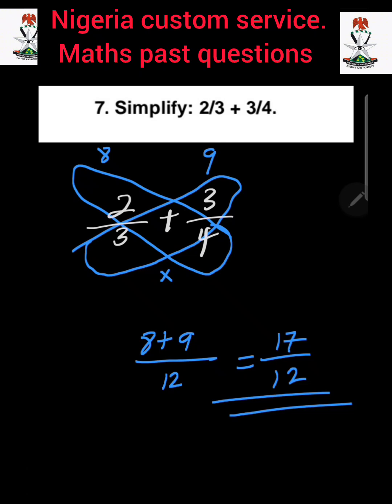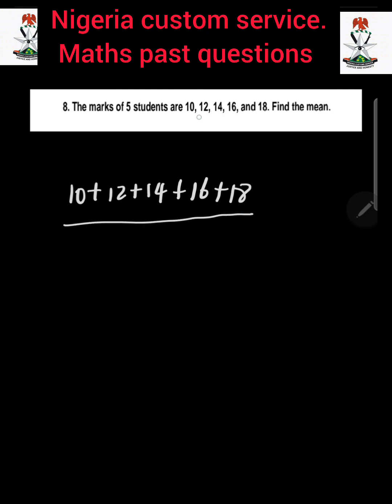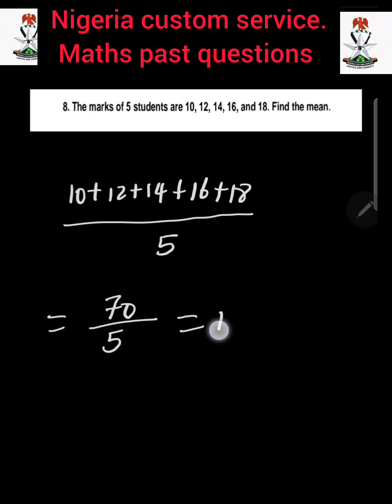Question number 8: The marks of 5 students are 10, 12, 14, 16, and 18. Find the mean. We are going to sum all the marks divided by how many marks there are. So 10 plus 12 plus 14 plus 16 plus 18, divided by 5. The sum is 70, divided by 5, which gives us 14. That is the answer.